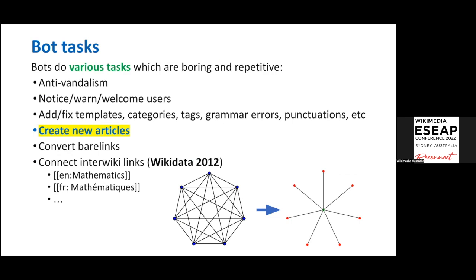The first type is the anti-vandalism bot. Second, if you create a new account in Wikipedia you'll see a welcome message — that's also a bot. And there are others for fixing template category tags, grammar correction, typo fixing, and so on.